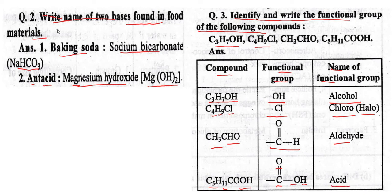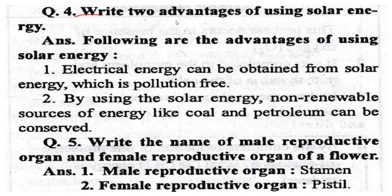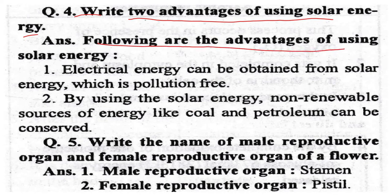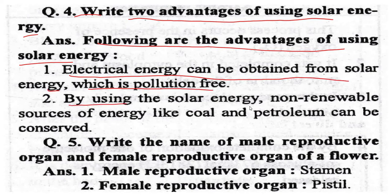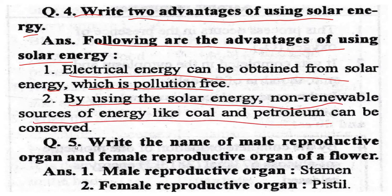Question No. 4. Write the two advantages of using solar energy. First, electrical energy can be obtained from solar energy which is pollution free. Second, by using solar energy, non-renewable sources of energy like coal and petroleum can be conserved.